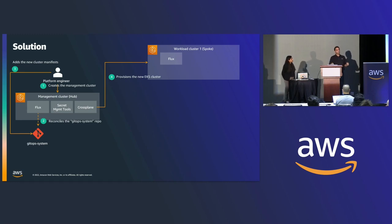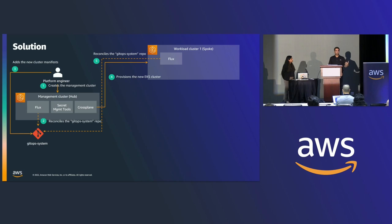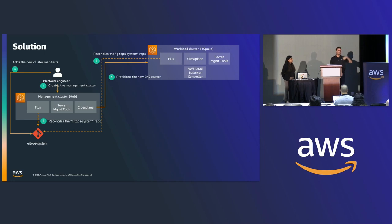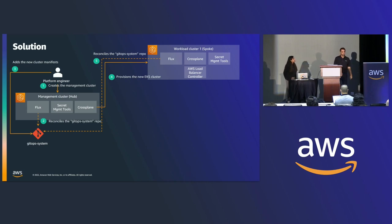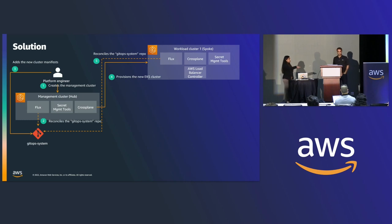The workload cluster comes with Flux installed, which starts reconciling the GitOps system repo as well, in order to install the different tools needed on the workload cluster — such as a secret management tool or ingress controller like the AWS Load Balancer Controller. This is a conscious decision to deploy separate instances of Flux and Crossplane on each cluster rather than managing everything from the management cluster. The reason is scalability — a single controller has limits on the number of reconciliations it can perform — and also to reduce dependency on the management cluster. If the management cluster's availability is impacted, workload clusters can continue reconciling application repos with their own Flux controllers.